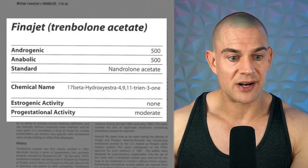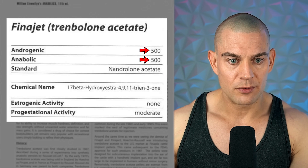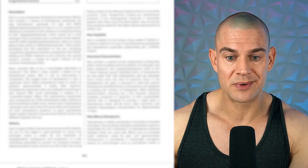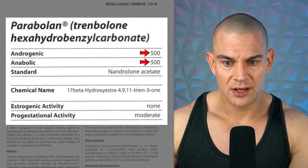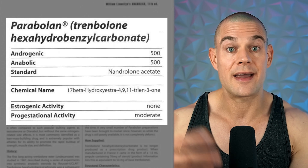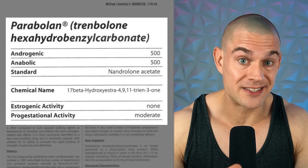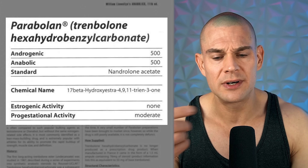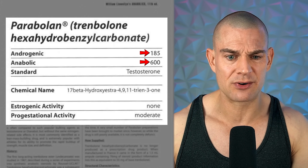Can we do some dubious extrapolation using math — not magnets — to see how Trenbolone compares to testosterone? Nandrolone acetate is an ester, but the anabolic androgenic rating of Trenbolone acetate is 500 to 500. Trenbolone enanthate also has an androgenic to anabolic rating of 500, as does Trenbolone hexahydrobenzylcarbonate — all compared to nandrolone acetate. Using highly dubious and speculative math, comparing nandrolone to the reference standards of testosterone and extrapolating that using testosterone as the reference standard for Trenbolone would give Trenbolone an anabolic rating of 625 and an androgenic rating of 185.